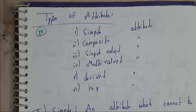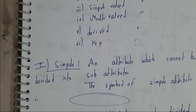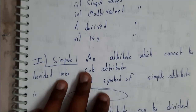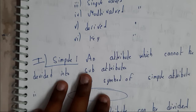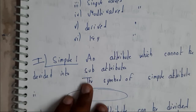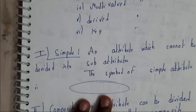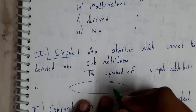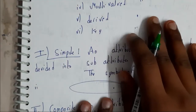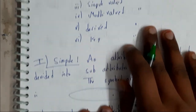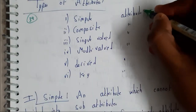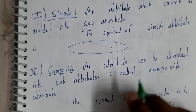A simple attribute is an attribute which cannot be divided into sub-attributes. The symbol of a simple attribute is a small oval. So basically, this cannot be further divided.